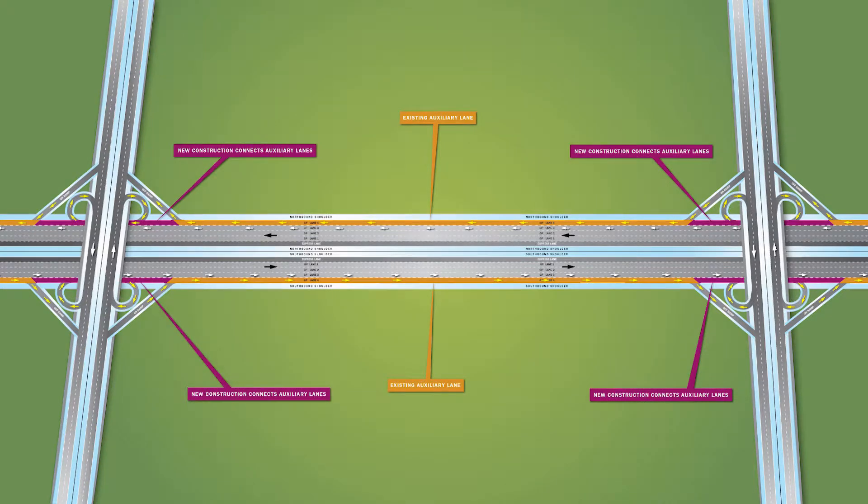These existing auxiliary lanes provide an opportunity to create an additional general purpose lane by connecting them through each interchange, as shown here in the purple sections.